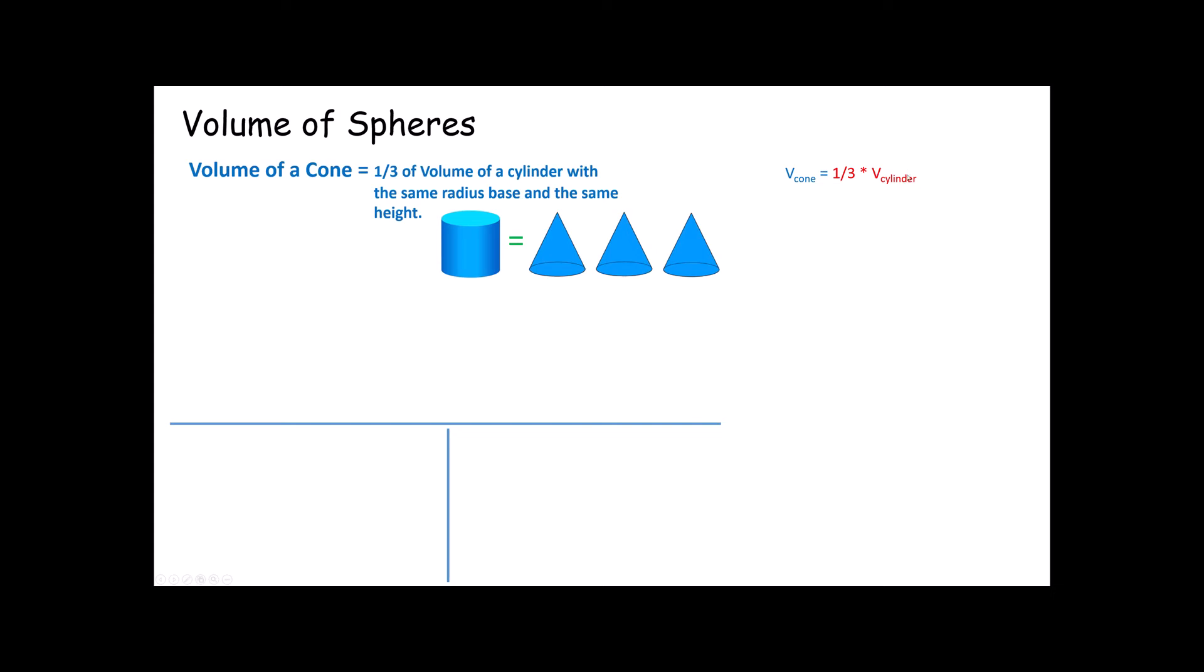Now, we know that the volume of a cylinder is pi times the radius squared times the height. Here again, this formula is based on the idea that a cylinder is a bunch of circles stacked on top of one another. We have another video where we talk about that. We're not going to spend a great deal of time talking about that here today.